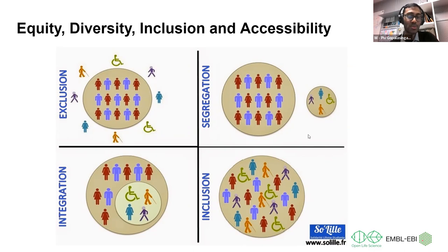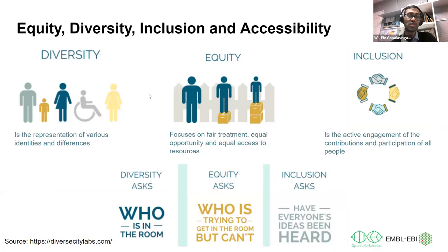Accessibility is something that can support protected characteristics. Some people group accessibility together with equity, diversity, and inclusion, but it is slightly different — still a very necessary part of the work on a practical level. To summarize: diversity asks who is in the room; equity asks who is trying to get in the room but can't; and inclusion asks whether everyone's ideas have been heard.